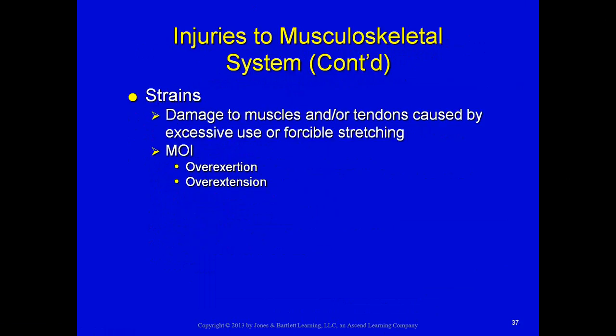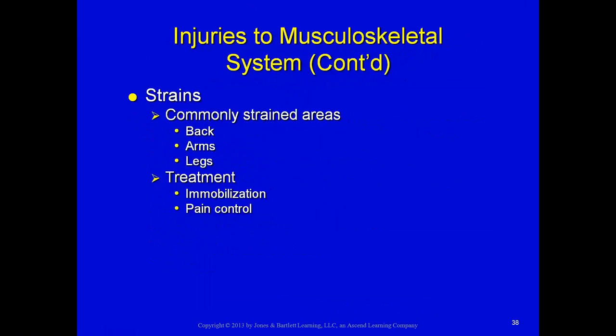Strains are damage to the muscle and/or tendons caused by excessive use or forcible stretching. The mechanism of injury is overexertion or overextension. Strains occur in the back — low back strains — and in the arms and legs. They are painful and very difficult to distinguish from a sprain or fracture unless obvious. Treatment is the same: immobilize, ice, and pain control.